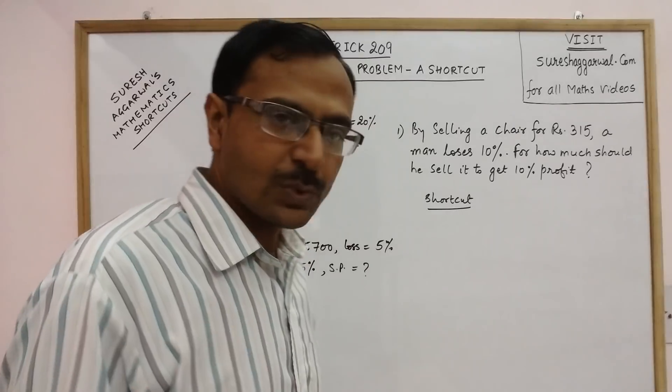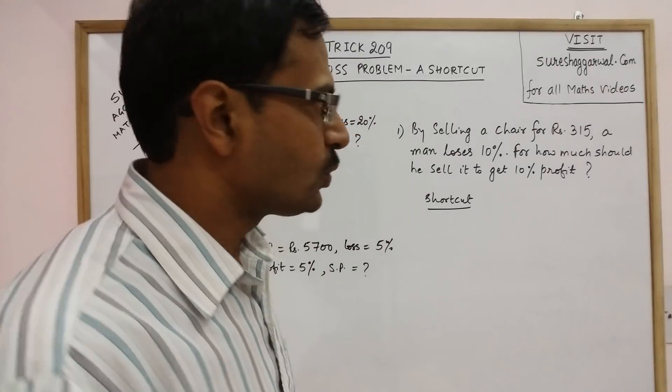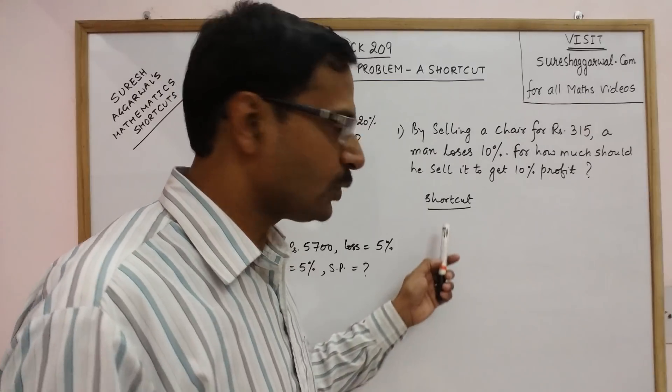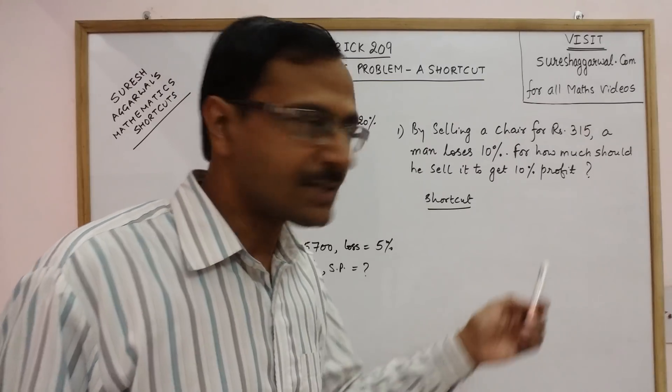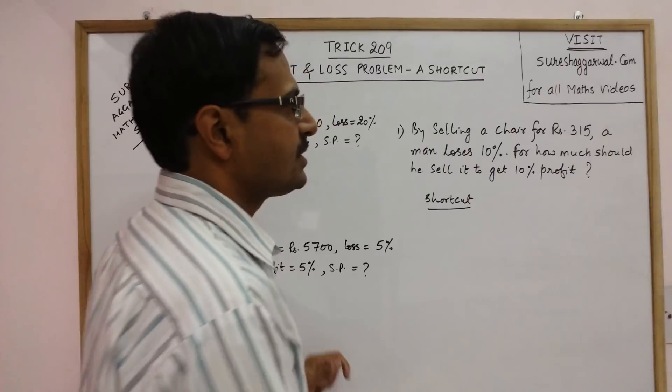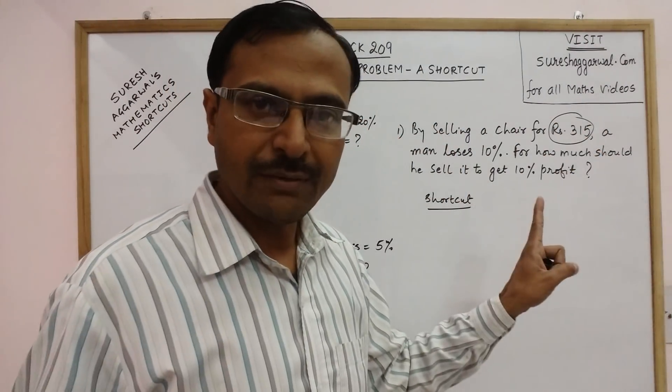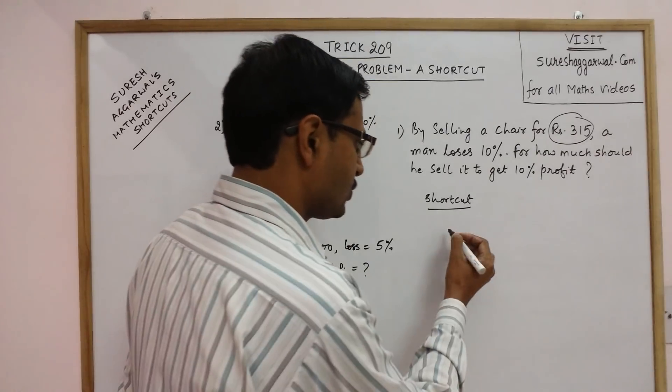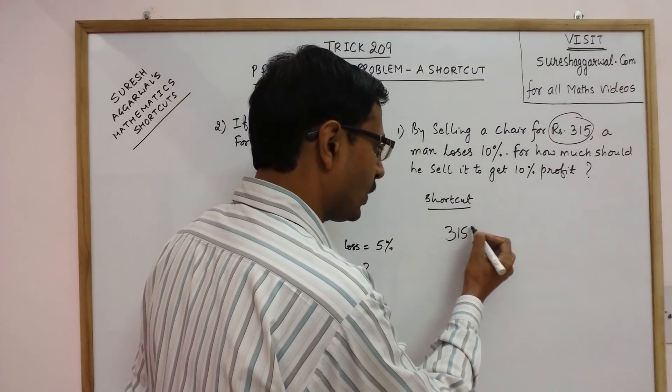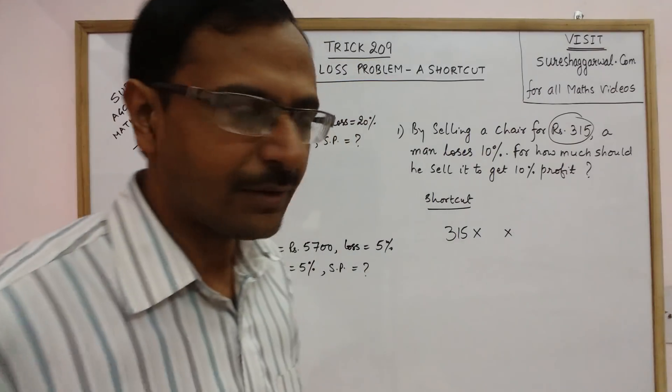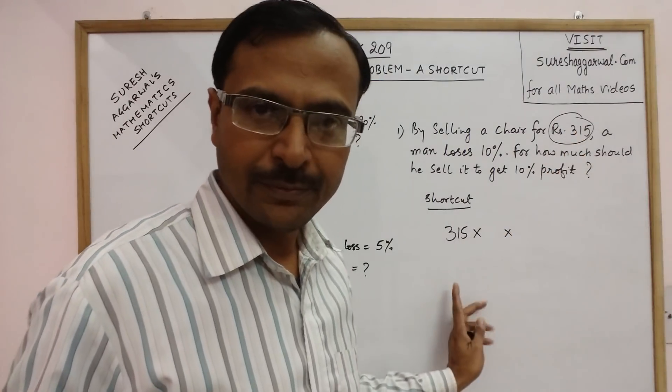For solving this question through shortcut, you need to understand three terms. First is the amount given in this question, which is 315. This is the first quantity we need to multiply.